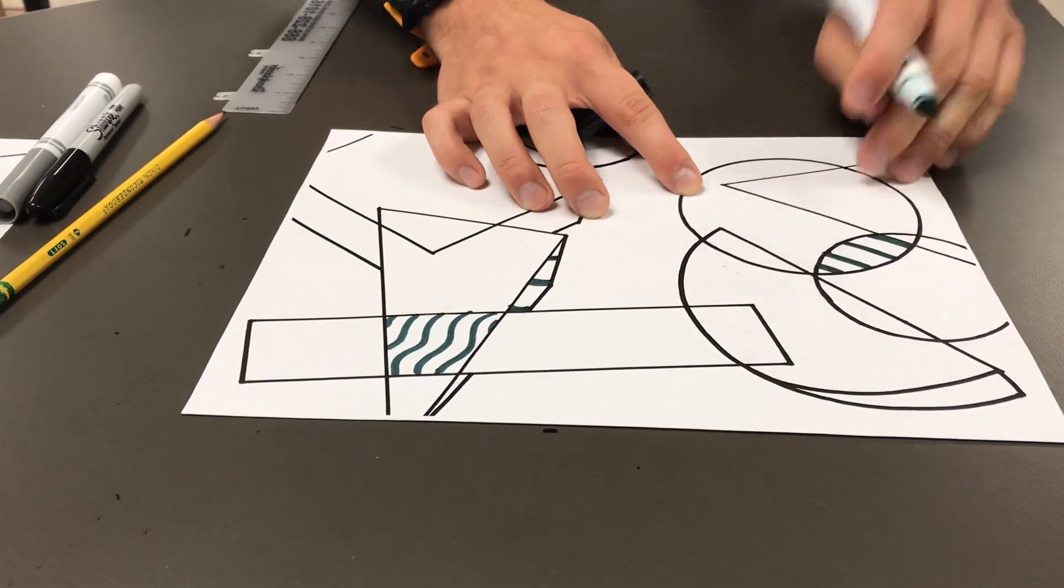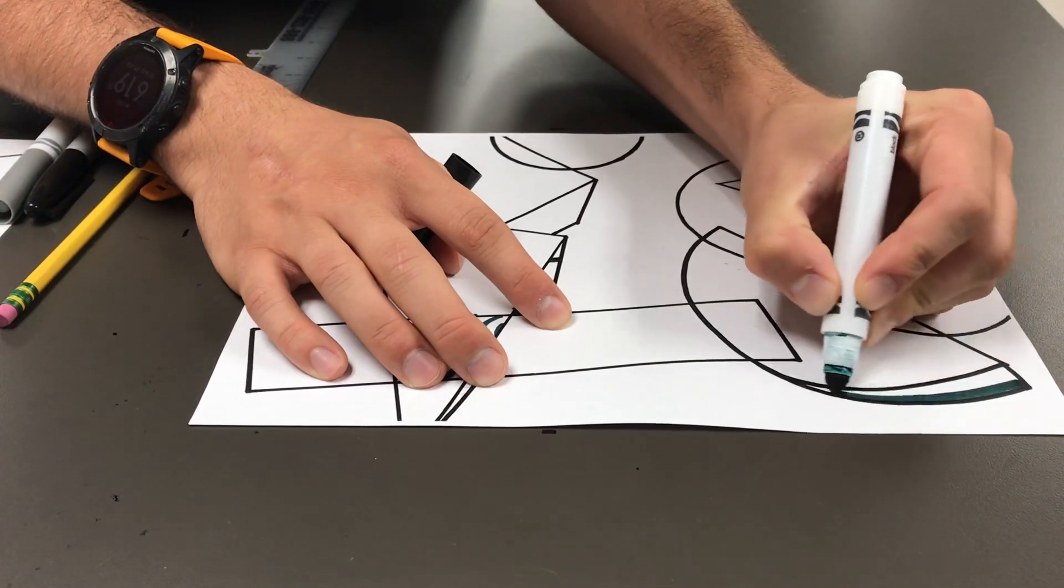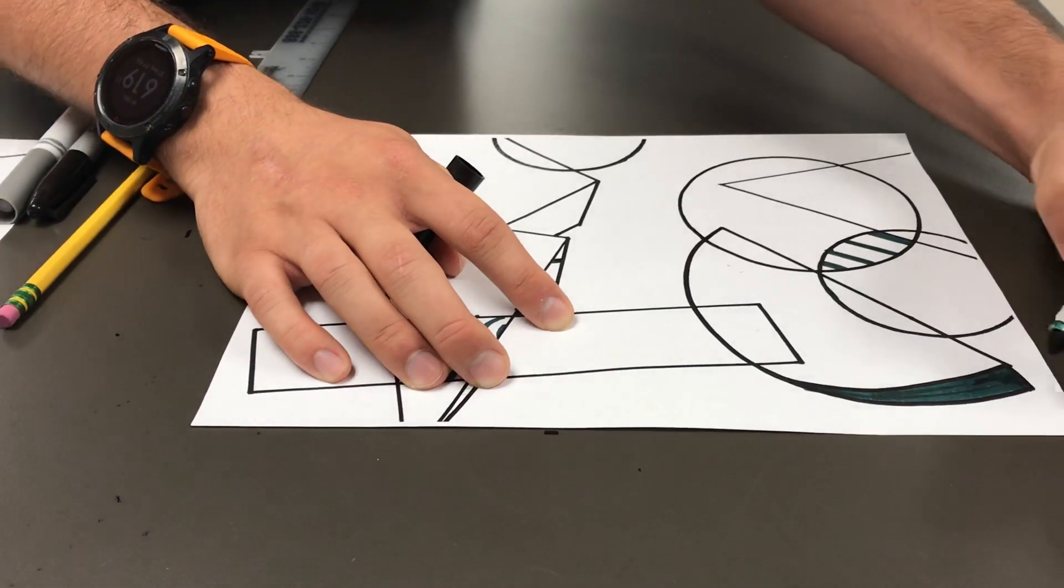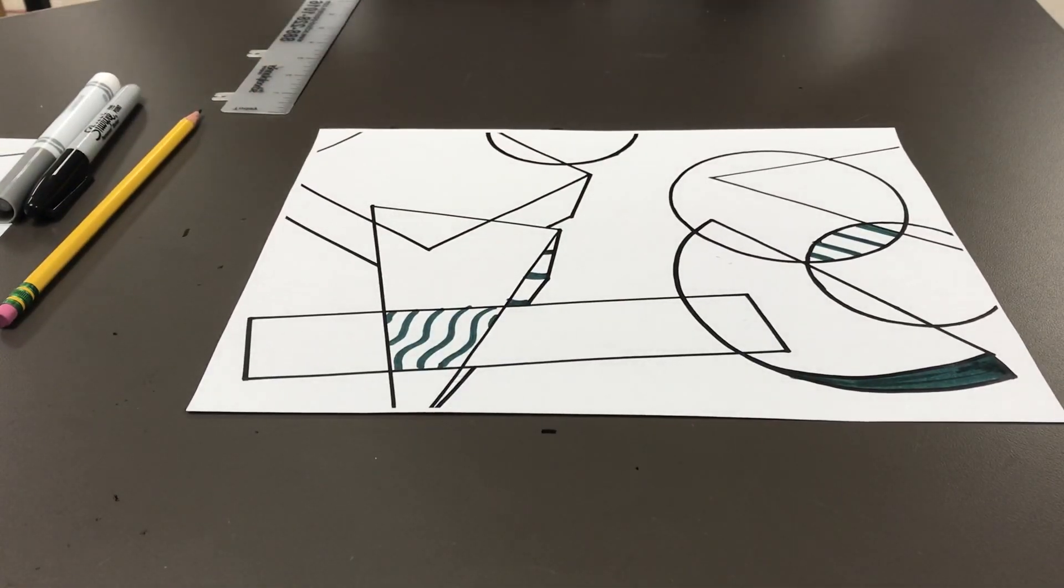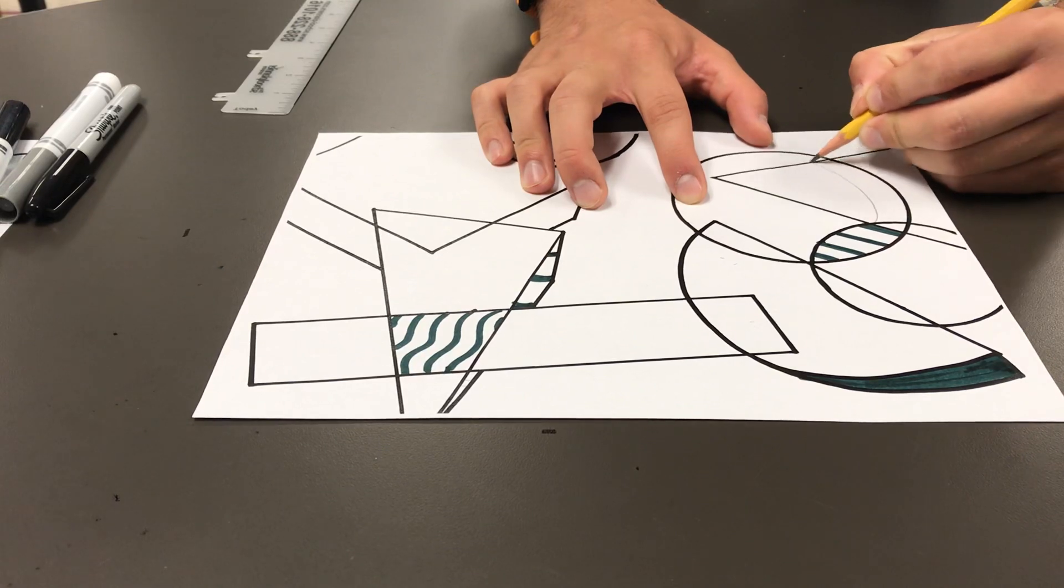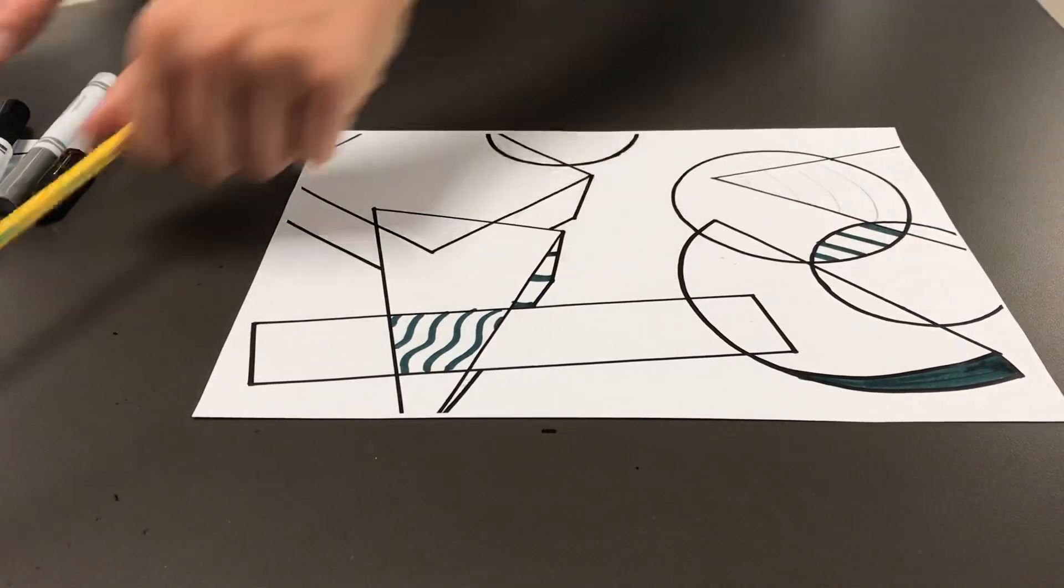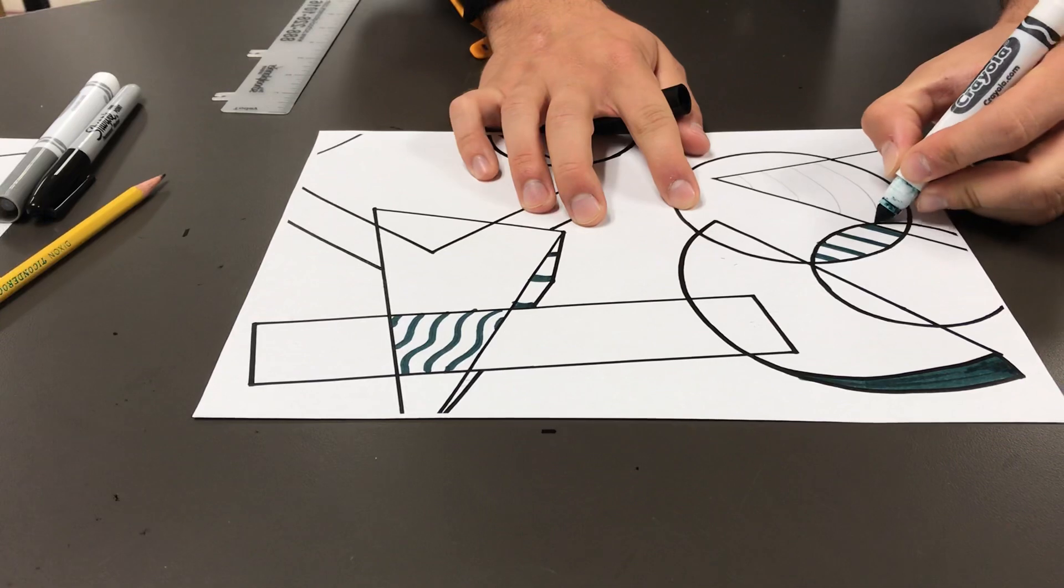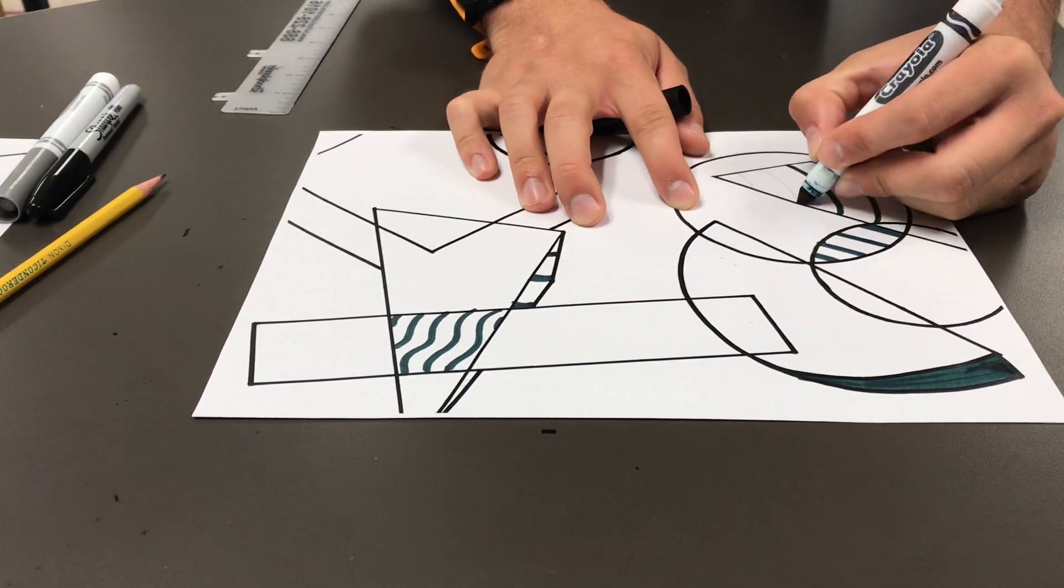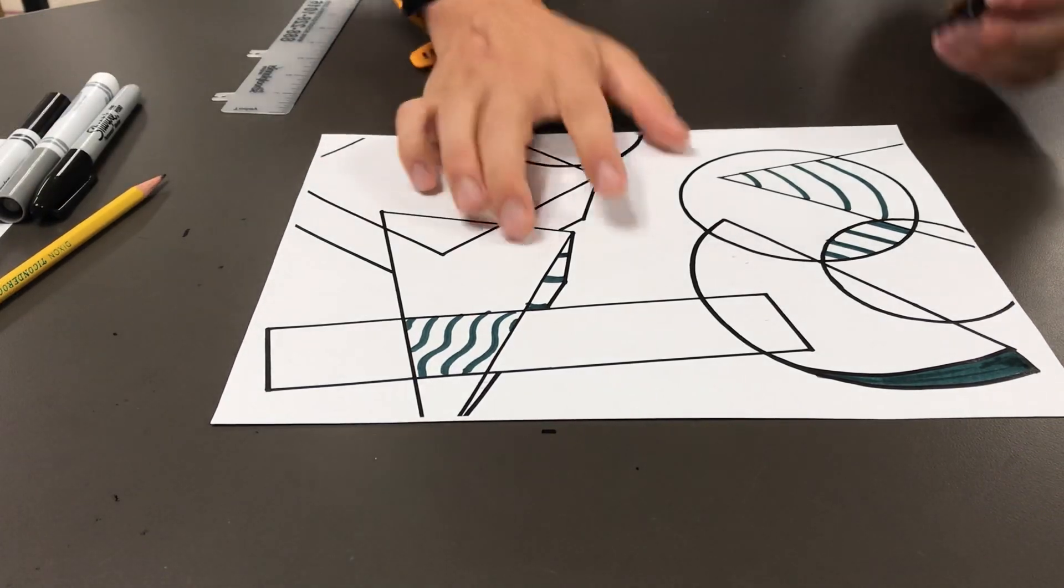You should have a different pattern in every single shape. Maybe some of these you just want to fill it in. That's okay too. Remember that your lines have different thicknesses as well. So maybe for some parts you want to use a variety of thin and thick lines to give yourself a different pattern.